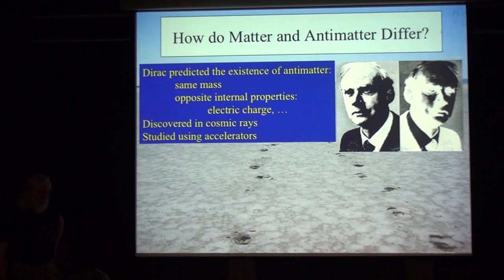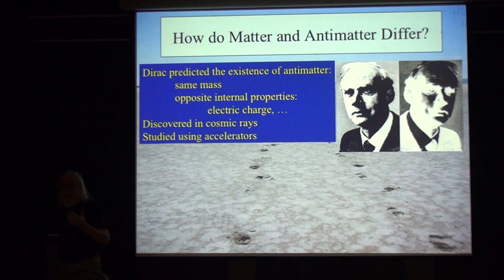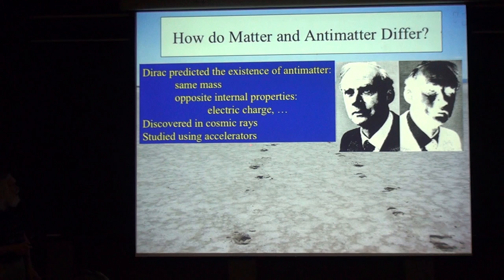Antimatter was postulated by Dirac in the 1920s. He was trying to combine quantum mechanics with special relativity, and he predicted the existence of particles with equal and opposite properties from regular particles — equal masses, but for example opposite electric charge.